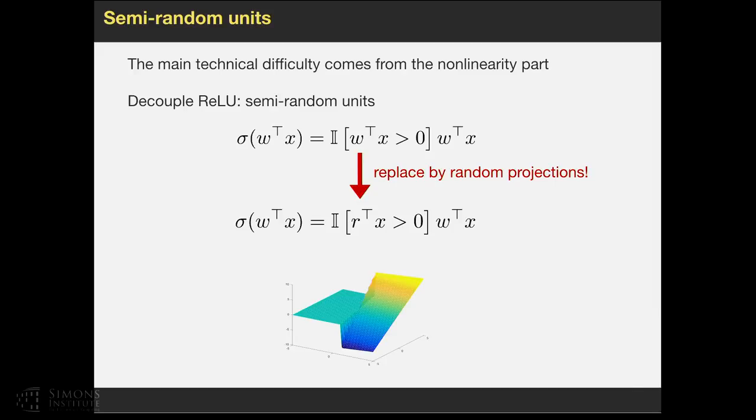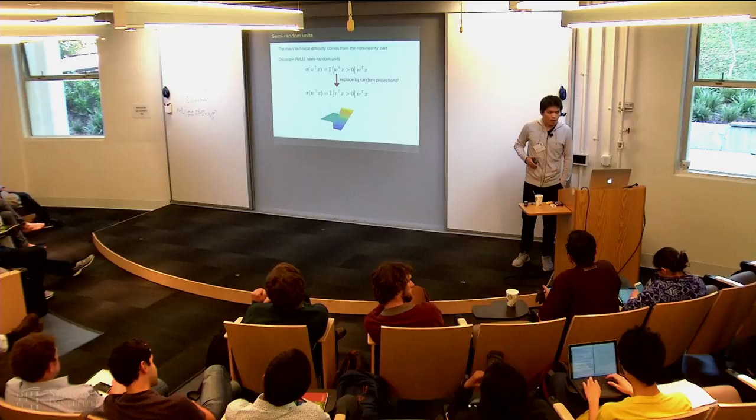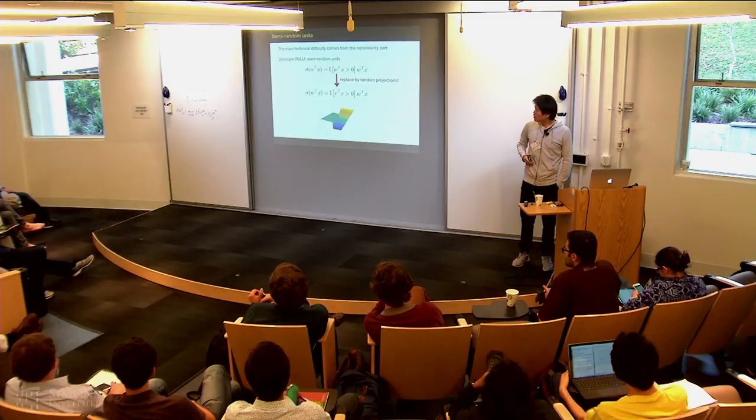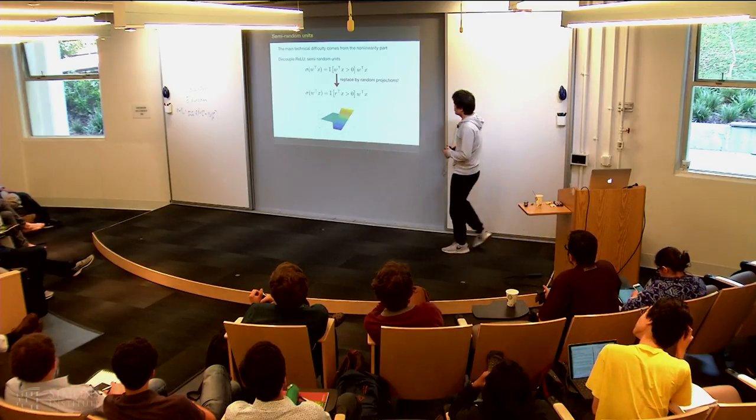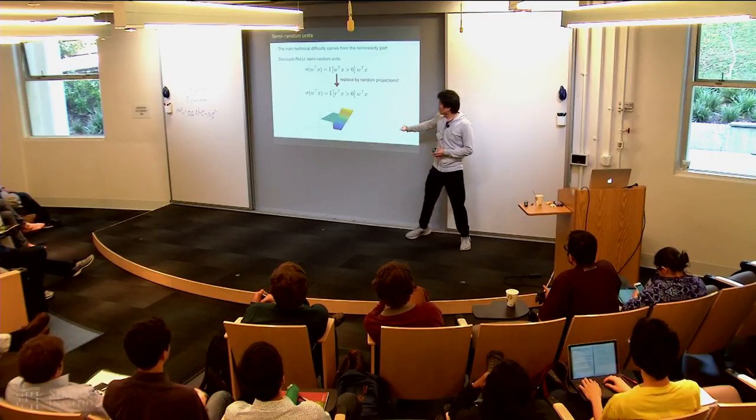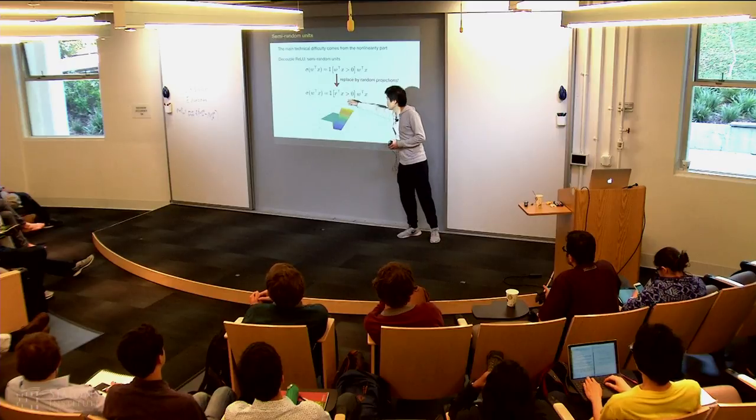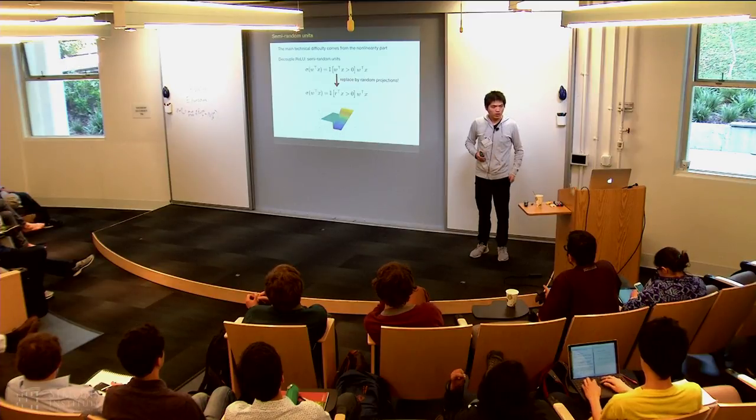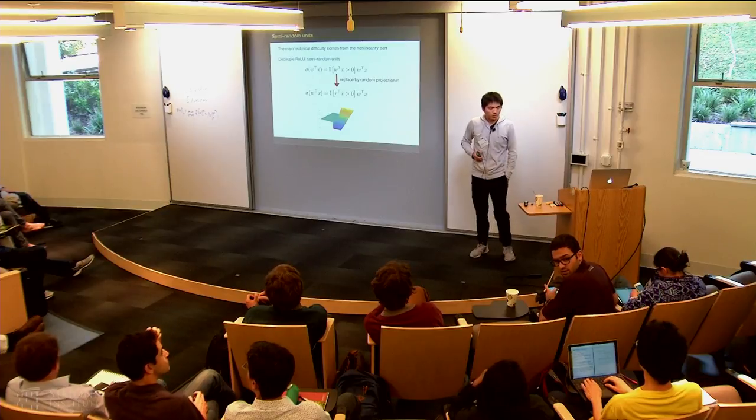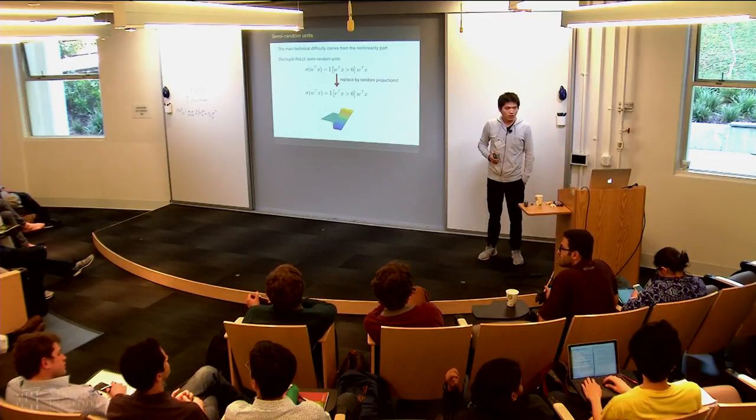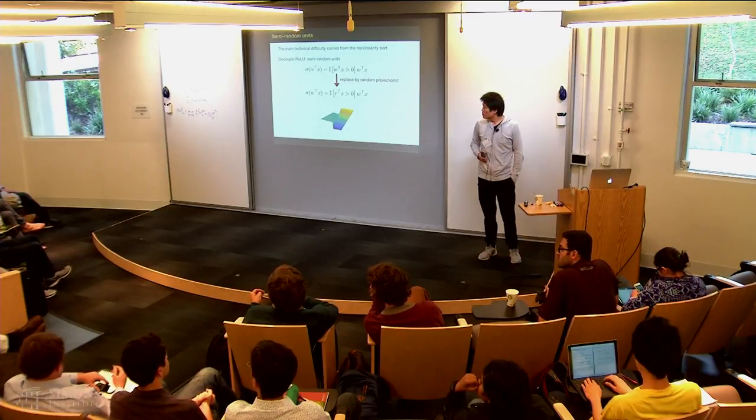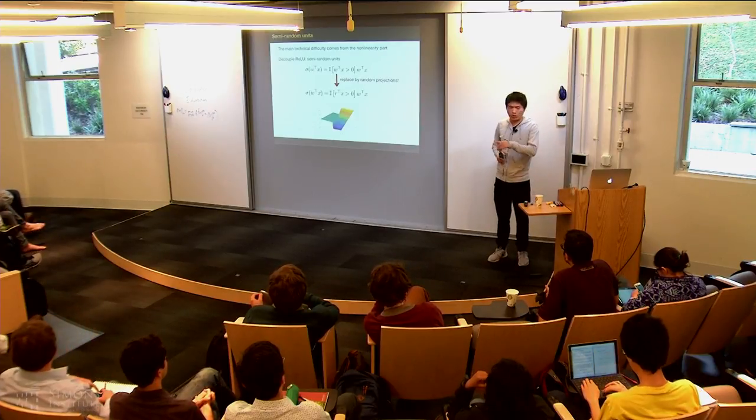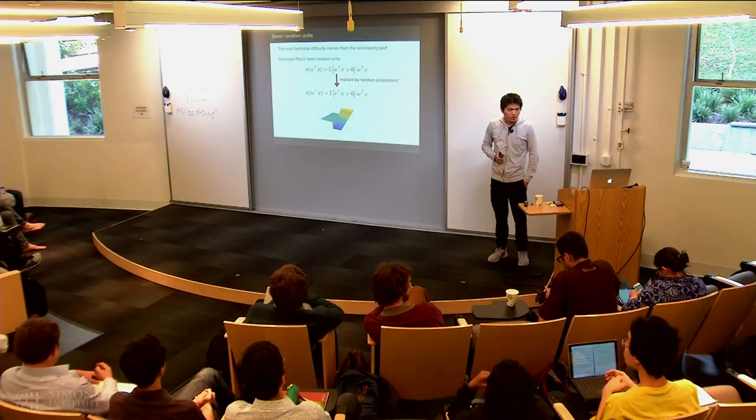It's just a Gaussian random projection. This R is for any unit, for any hidden unit I have one R. So if there are n hidden units, I have n R's. It depends on the input X. It's a fixed R. You fix it at the beginning and you don't optimize it. You only optimize W.